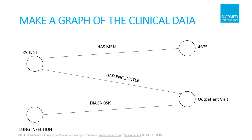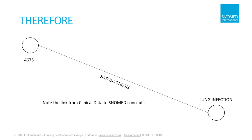Now, to get to how we could do clinical data in the same kind of model, we can start with a patient. The patient can be related to a number, and the name of the relationship could be 'has medical record number.' That same patient with a medical record number could have an encounter, which is an outpatient visit. The outpatient visit is connected to a date and time and location, but it's also connected to a diagnosis — in this case, lung infection — and this could be a SNOMED term with a SNOMED code. So if we had this kind of relationship where a patient with a medical record number had an encounter with a diagnosis of lung infection, we can also assume that this medical record number is related to a SNOMED code.